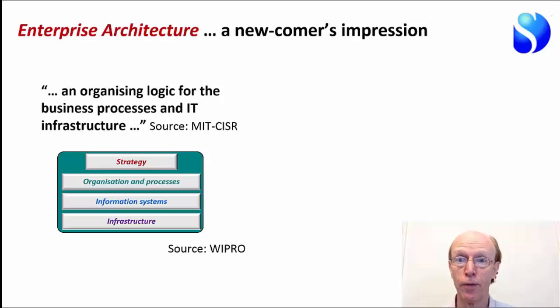An organization is following a strategy because it wants to achieve its business goals, and that strategy is enabled by the way in which the organization works and the processes that it undertakes. Armed with that understanding of how the business works, you can design the portfolio of information systems that are necessary to support the business, and that in turn needs to be supported by the IT infrastructure.